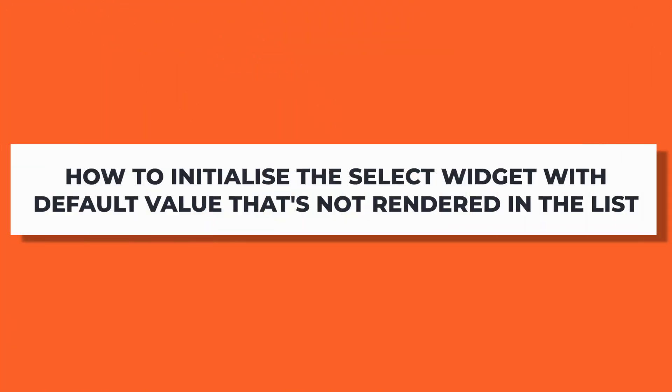And lastly, I'll show you how to pass in default values for the select widget that are not already rendered in the list. That's going to be very helpful if you have server-side filtering set up. My name is Confident and I'm a developer advocate at AppSmith.